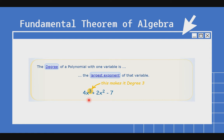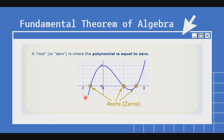So, ibig sabihin, itong 4x raised to the 3rd power plus 2x squared minus 7, siya ay may degree 3. Kasi 3 ang pinakamataas niyang exponent — hindi 2 at hindi din 1, kasi 3 nga ang pinakamataas.